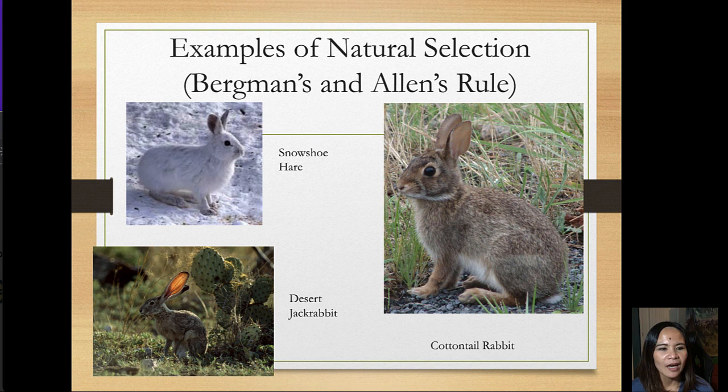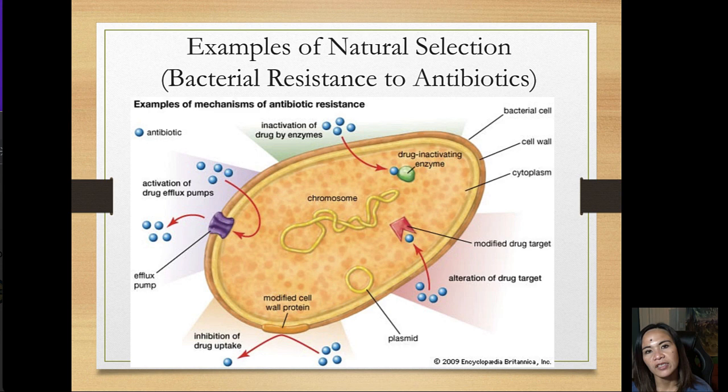What are some examples of natural selection? The Bergmann and Allen's rules are examples — these are all rabbits that speciated into three different types: the snowshoe hare, the desert jackrabbit, and the cottontail rabbit. Another example of natural selection is the resistance of bacteria to antibiotics.